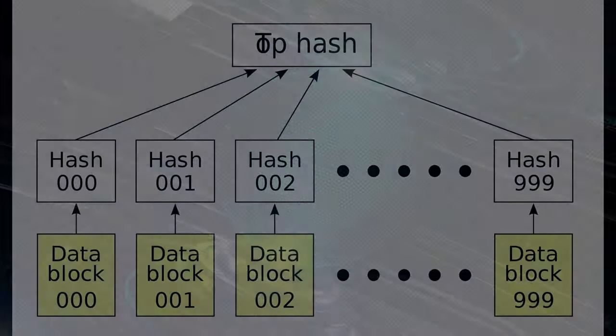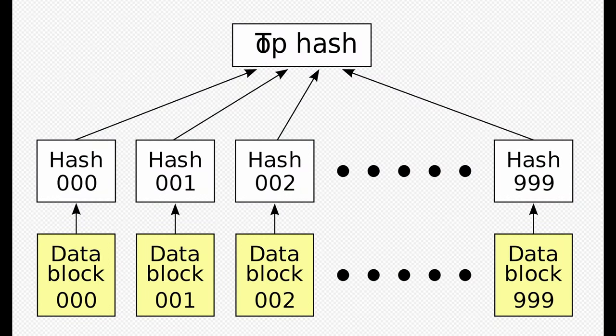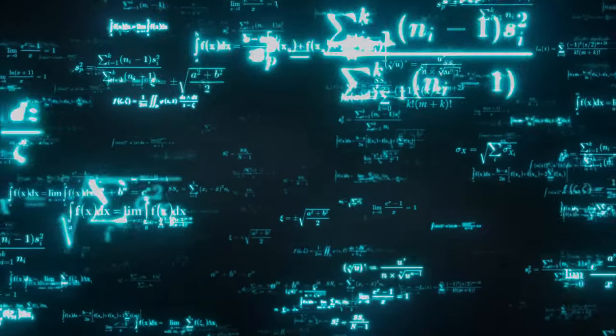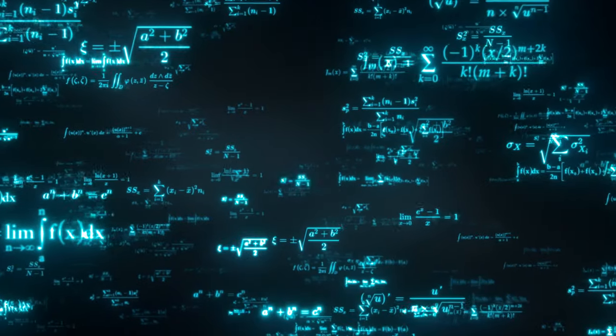What is a hash list and hash chain? A hash list is a list of hashes of the data blocks in a file or set of files. A hash chain is the successive application of a cryptographic hash function to a piece of data — to put it as simply as I can explain.